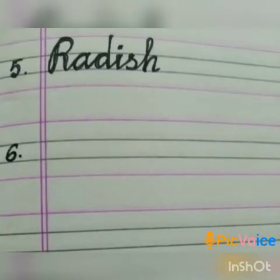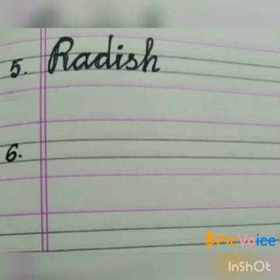Fifth one: Radish. Radish is a vegetable — it looks like a carrot but is white in colour. That is radish. The spelling is R-A-D-I-S-H. Radish.